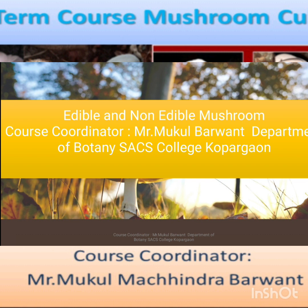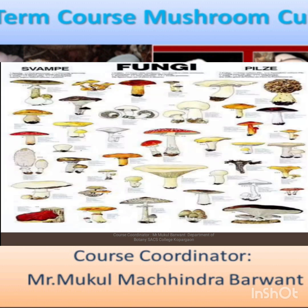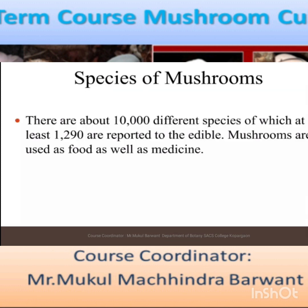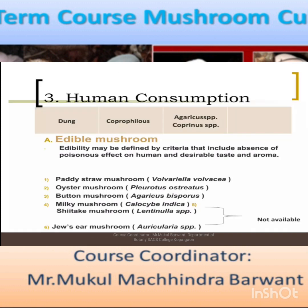Hello, welcome to all of you. In today's session we are going to see some edible and non-edible species of mushroom. Mushrooms are found in natural growth, as we can see in this slide. There are about 10,000 species of mushroom, of which at least 1,219 species are reported as edible. Mushrooms are used commonly for food purposes, so how do you identify edible and non-edible mushrooms?